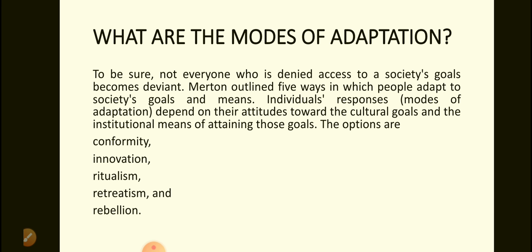What are the modes of adaptation? To be sure, not everyone who is denied access to a society's goals becomes deviant. Merton outlined five ways in which people adapt to society's goals and means. Individuals' responses — modes of adaptation — depend on their attitudes toward the cultural goals and the institutional means of attaining those goals. The options are conformity, innovation, ritualism, retreatism, and rebellion.